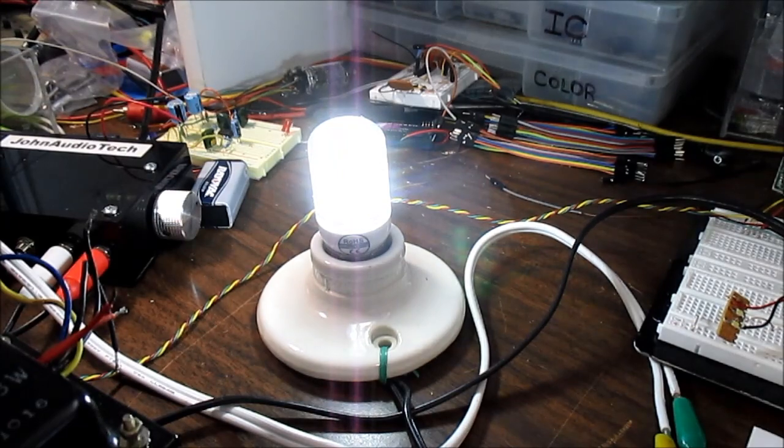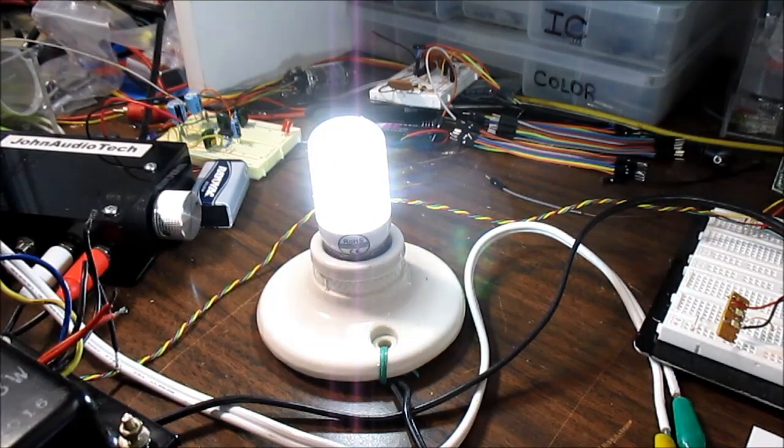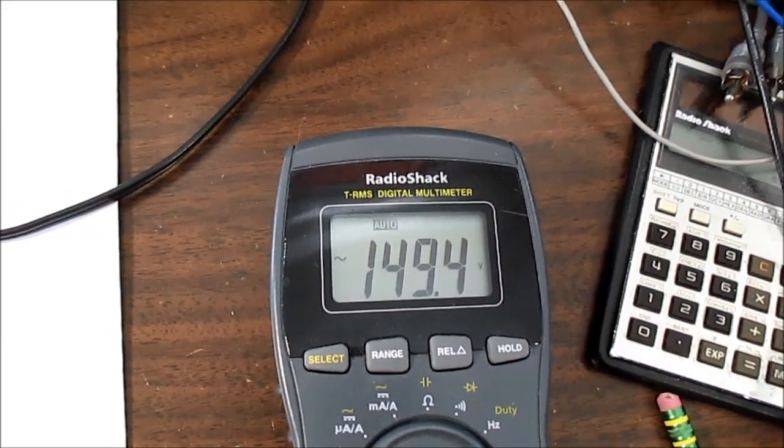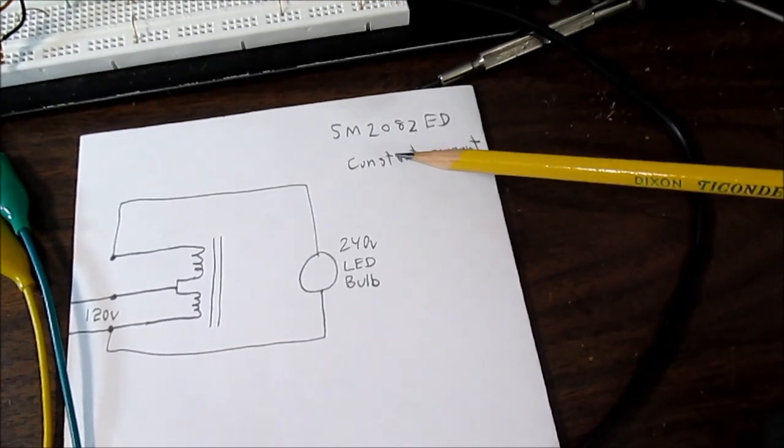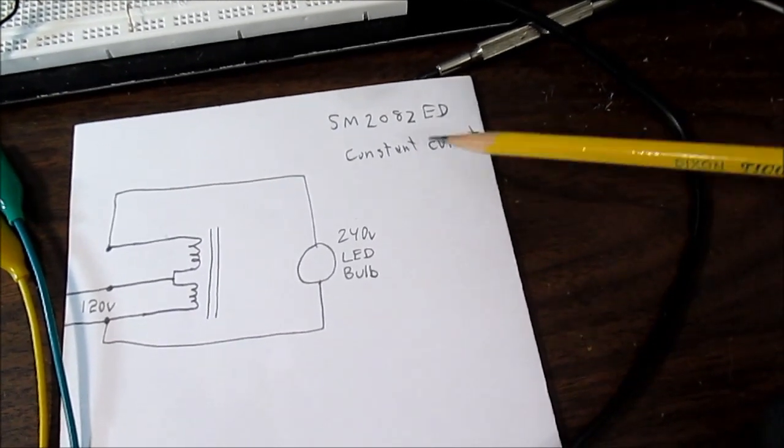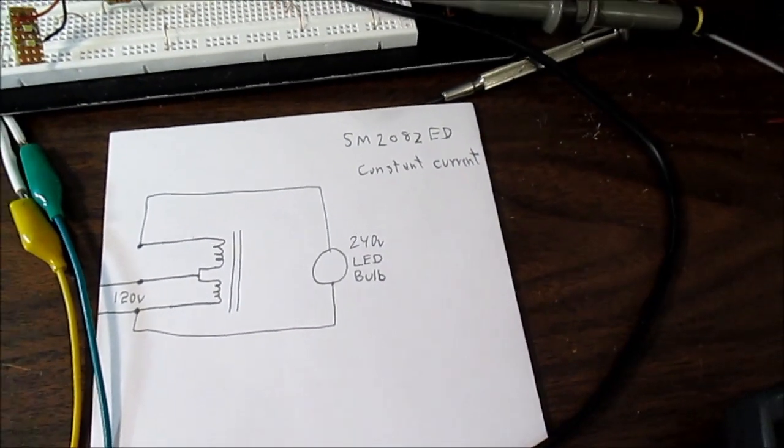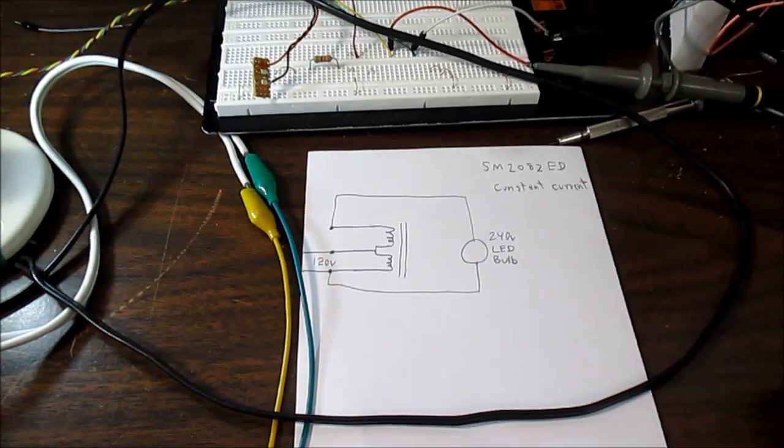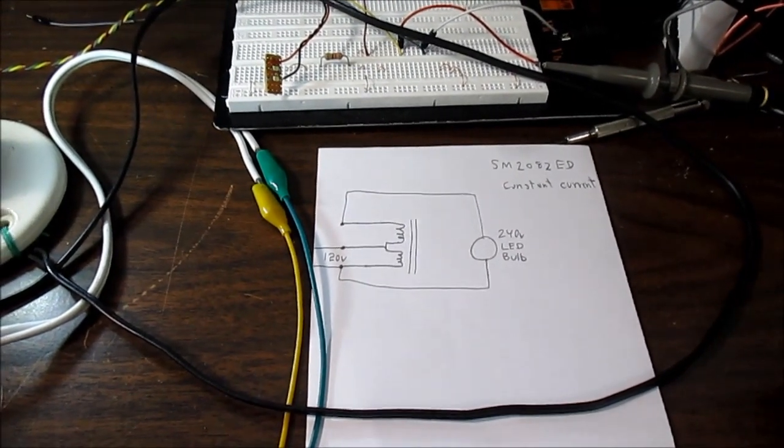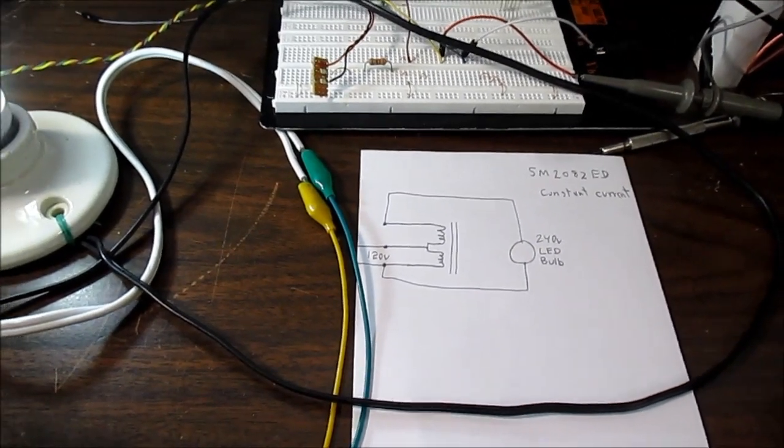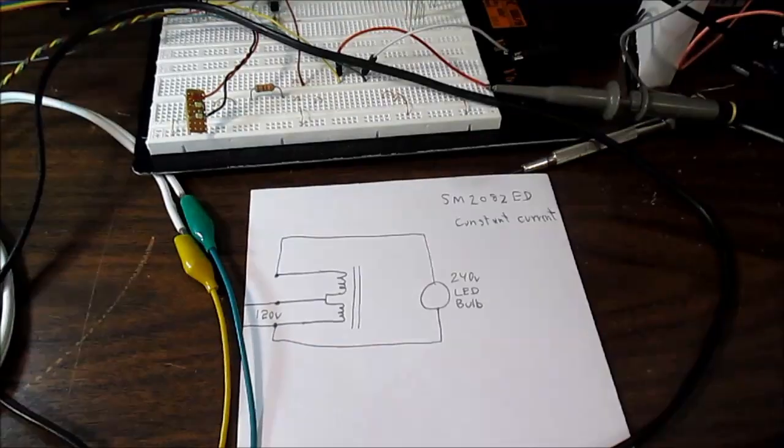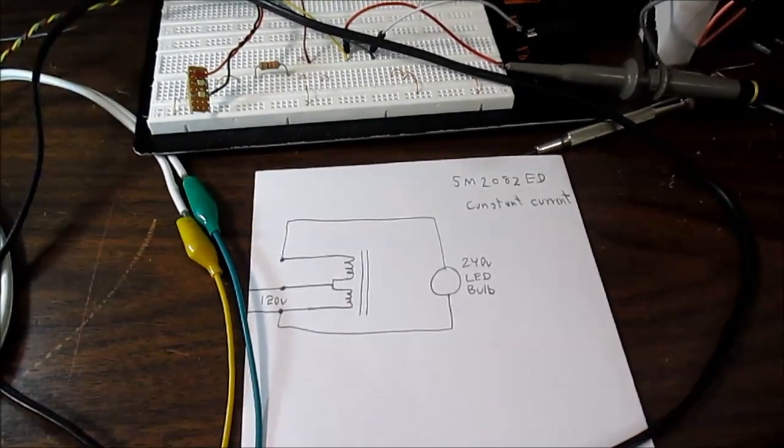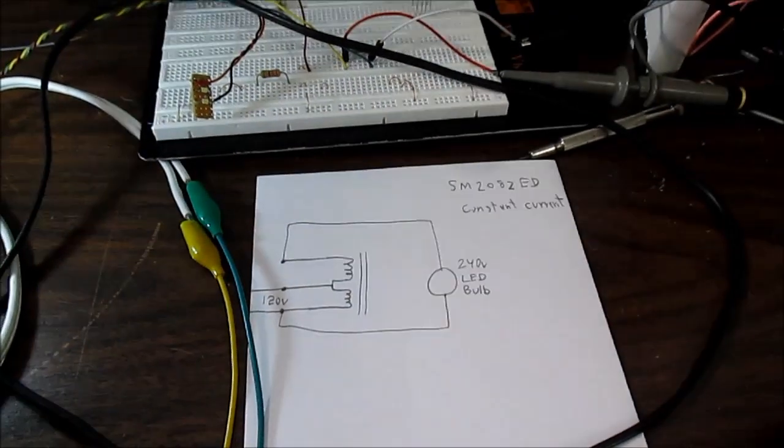It seems to get bright and stop right there. That's about 150 volts AC. By the way, that chip is an SM2082ED constant current type driver. It's one of those real simple type circuits where it just comes in through a bridge rectifier, gets filtered and runs through the constant current. And the LEDs are in series with the constant current source.